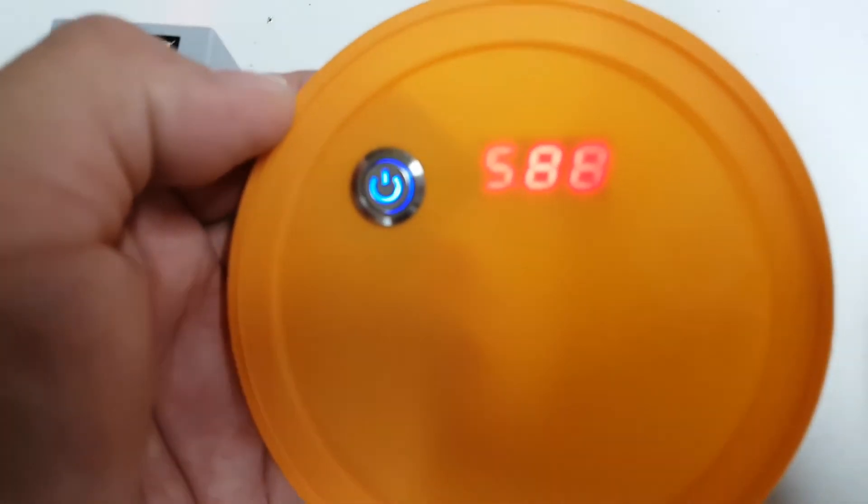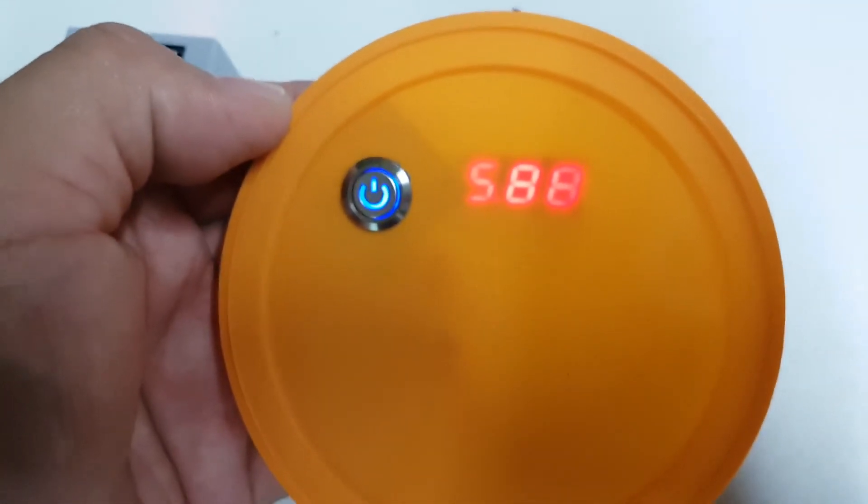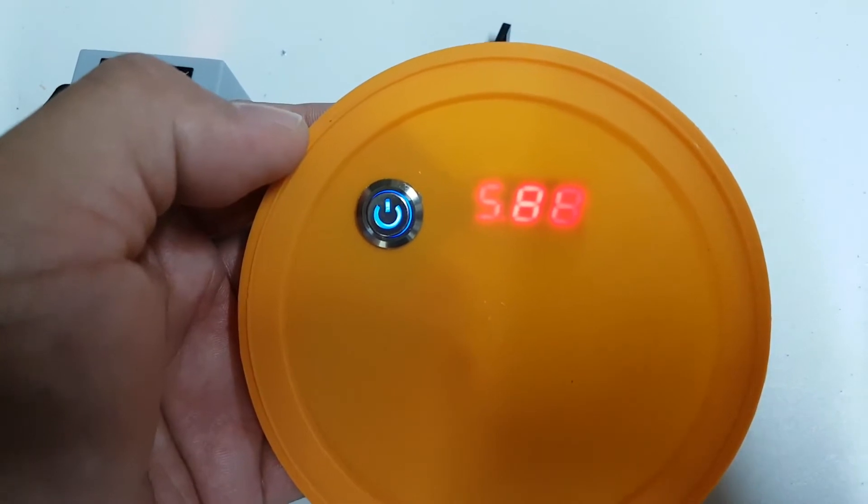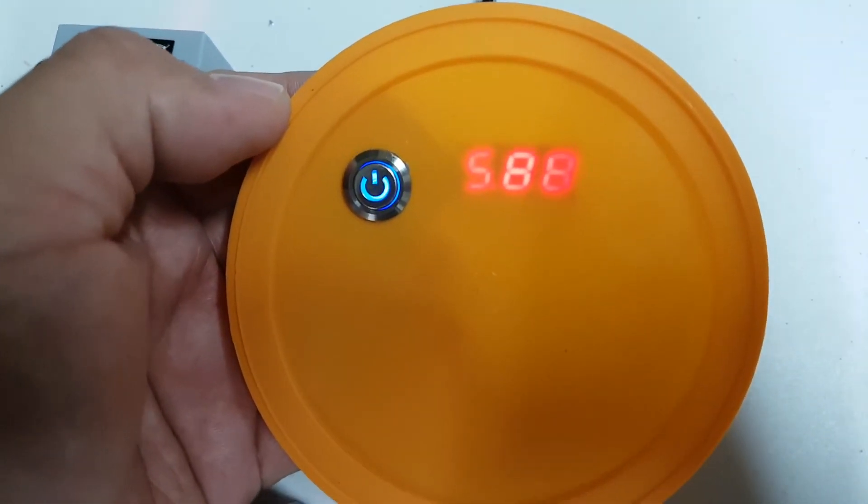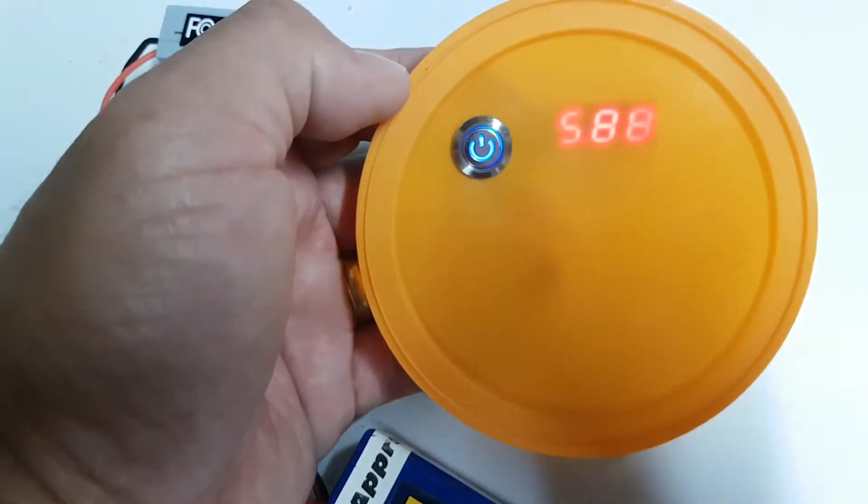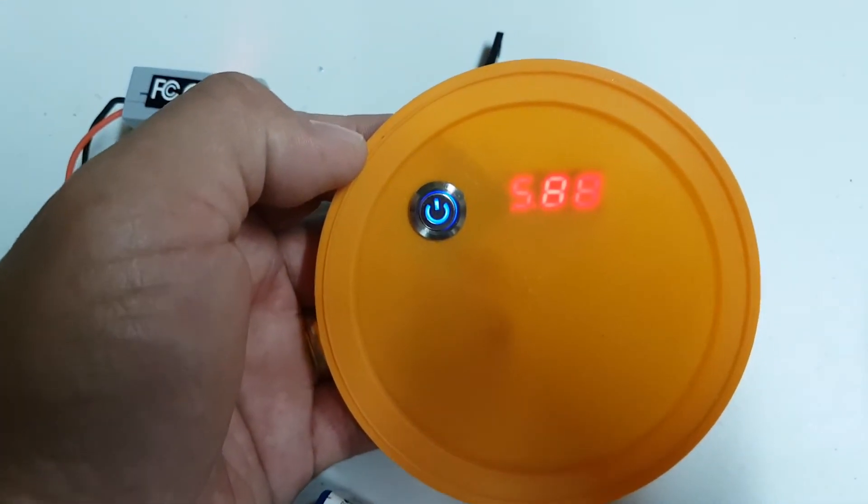And when I do I can see the voltage of the battery pack or the output. So it's like 5.88 volts going out to the receiver.